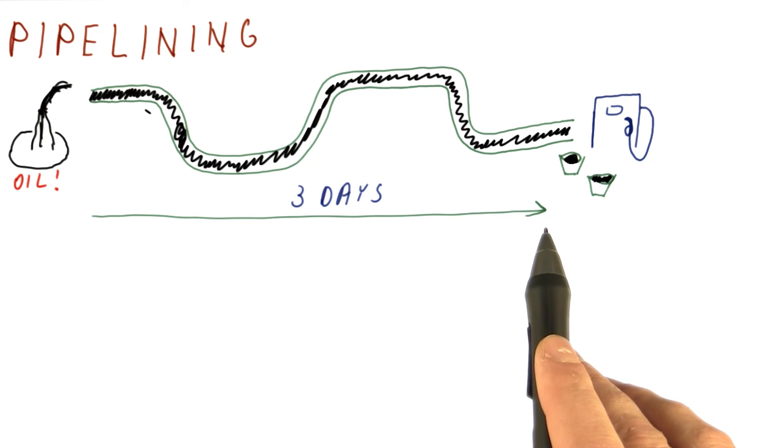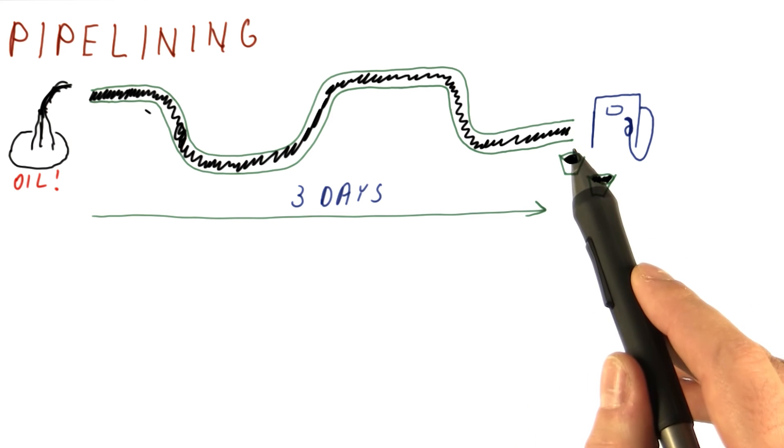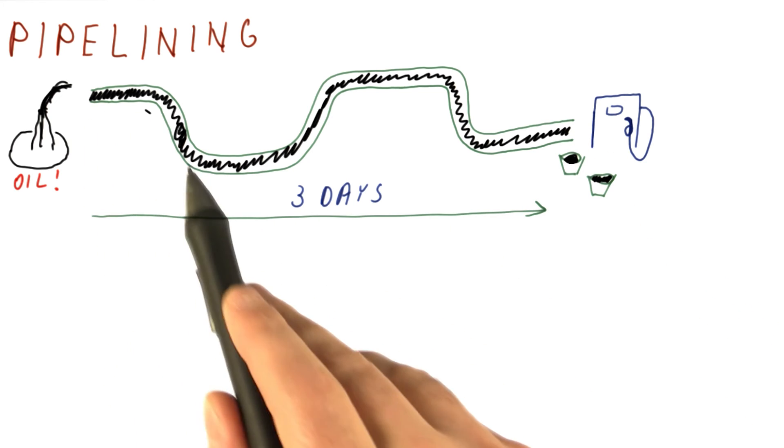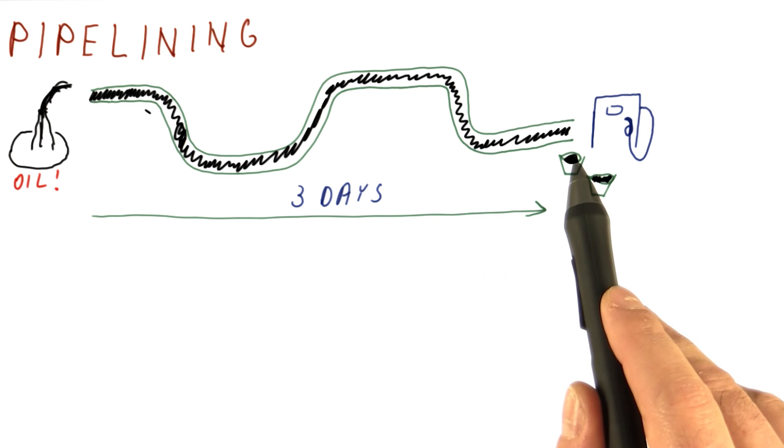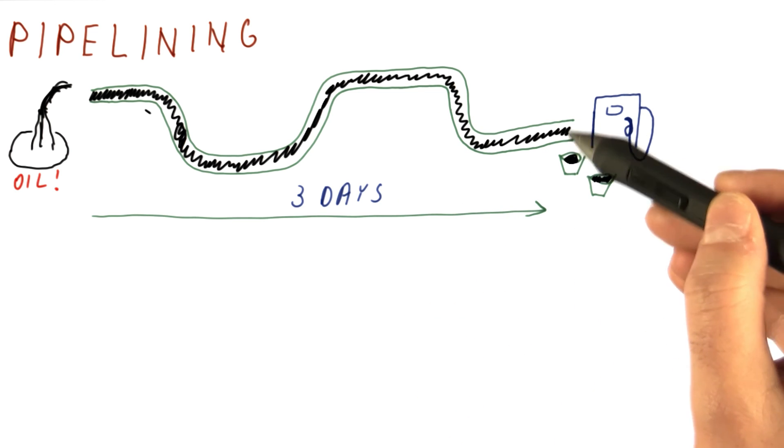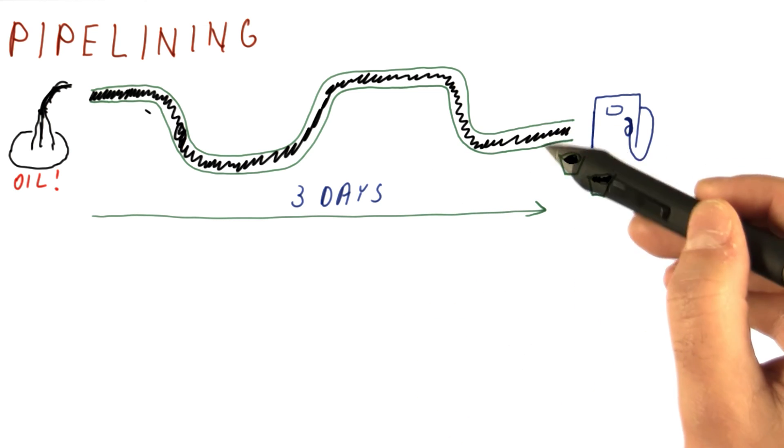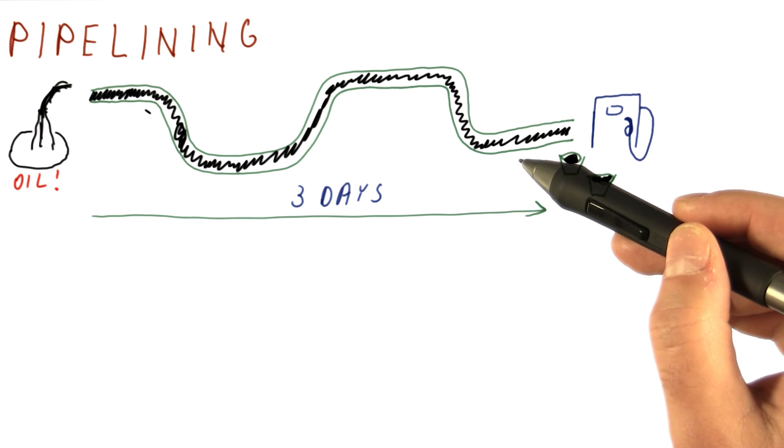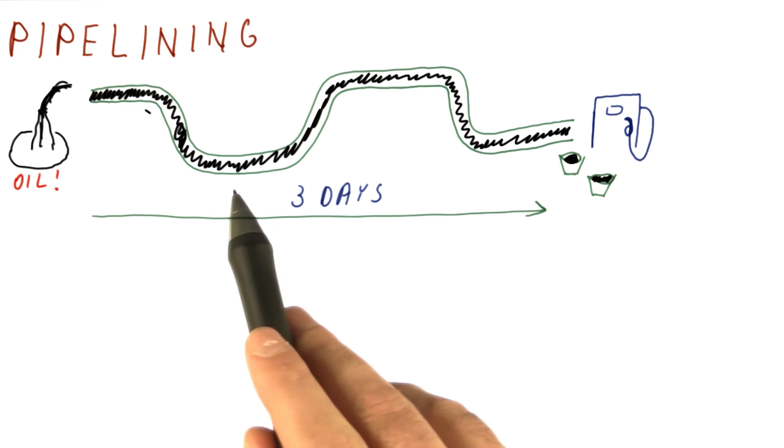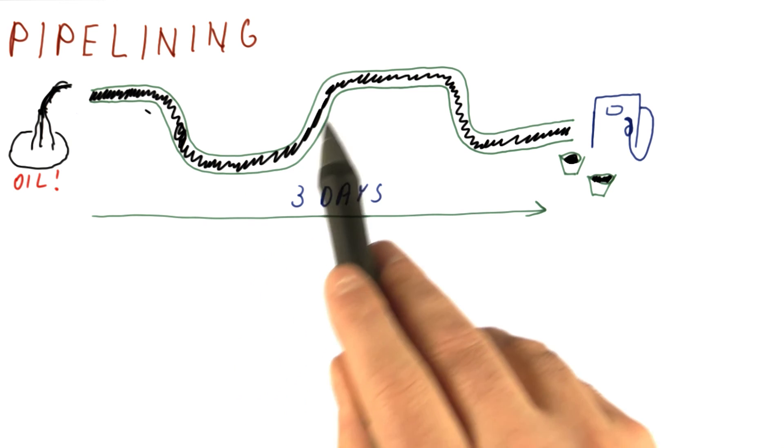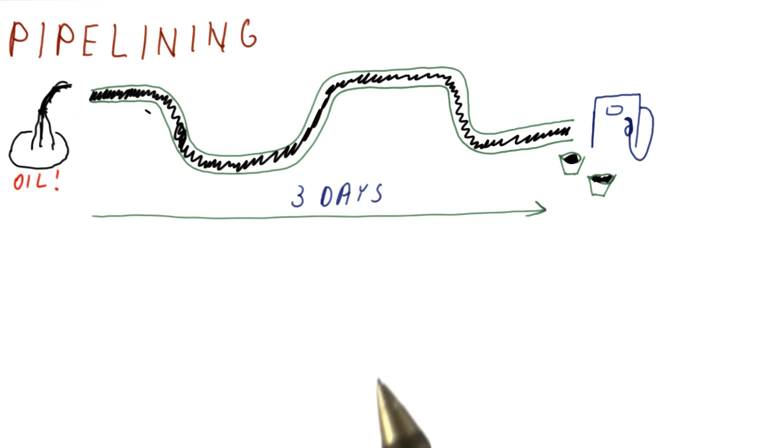So the idea of pipelining really is that although the latency is long for one unit of oil to get there, we can be having many units of oil in progress, so that when one comes out, we can very quickly get the next one, and the next one, and so on. We are not moving buckets one at a time. There are many, many buckets traveling at the same time.